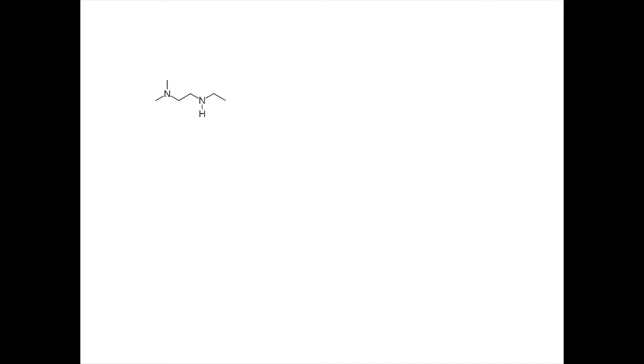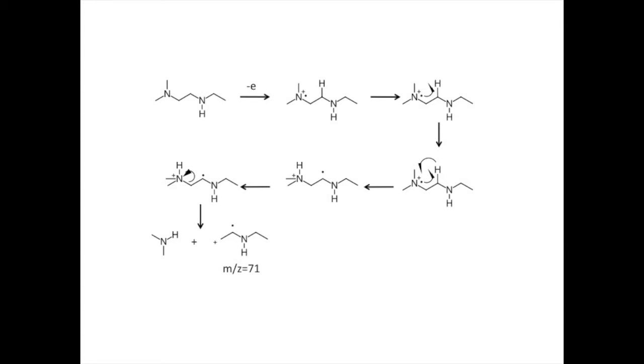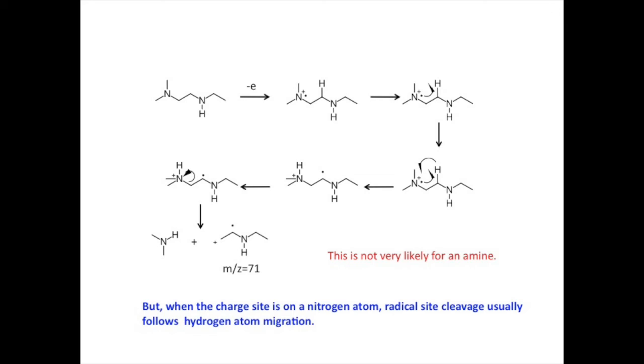That implies that the loss was a neutral molecule. Either ethyl amine or dimethyl amine must have been lost. How might that happen with our candidate structures? Consider ionizing the nitrogen on the left. If a hydrogen atom migrates to the nitrogen, we might lose dimethyl amine by inductive cleavage. That would give us a charged fragment of 71 atomic mass units. However, the literature shows that when the charge site appears on a nitrogen atom, then the most likely process to follow a hydrogen migration would be an alpha cleavage initiated at the radical site.